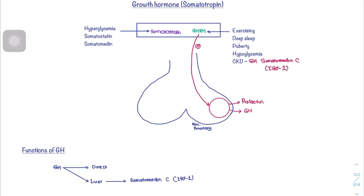There is a hormone synthesized by the hypothalamus which inhibits these cells from releasing growth hormone. Prolactin-releasing cells and growth hormone-releasing cells are two different cell types, but both are acidophilic. This is important in a tumor called pituitary adenoma, where there is excess release of both prolactin and growth hormones due to overgrowth of these acidophilic cells.